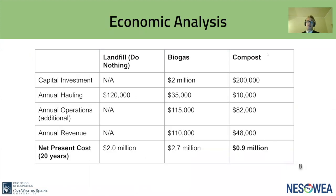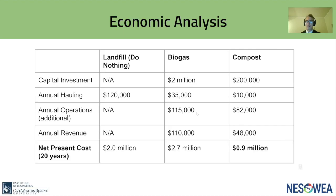Our team conducted a 20-year present worth analysis with a 2% inflation rate, generating a class 5 estimate. We defined landfilling as the do-nothing approach, which has the highest hauling cost. Biogas operators generate high revenue but also have the highest operating cost. Composting, with the lowest net present cost at 20 years, was the most economically favorable method.